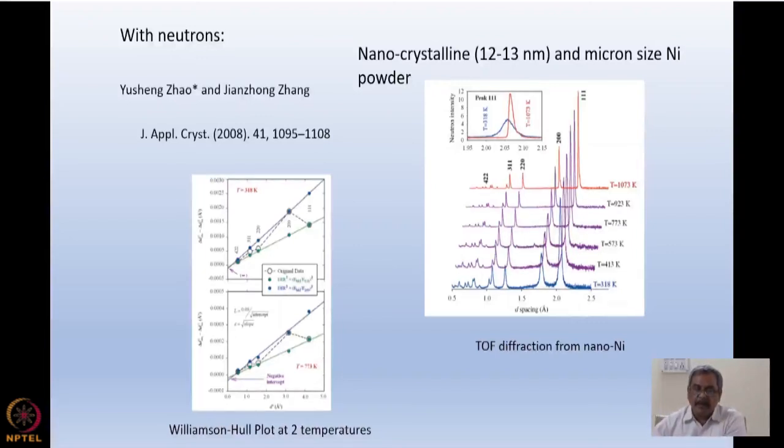So this completes the part that I want to discuss with you using neutrons: macro strains, micro strains, particle size. And these two techniques that I discussed now are more of interest for industrial problems, and many times these are done to find out strain in test welding joints or even samples which have been stressed for a long time like the railway track I showed, and here it is like nickel powder.